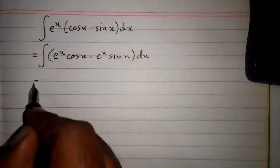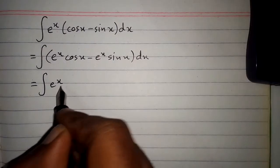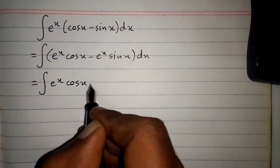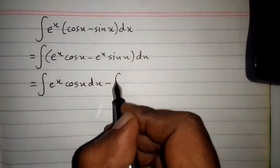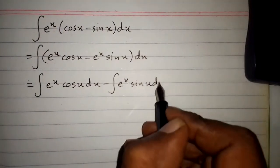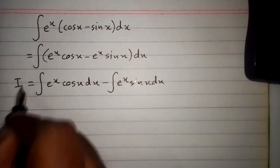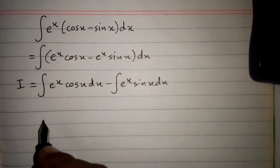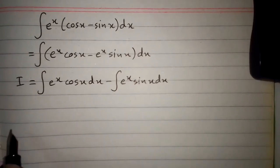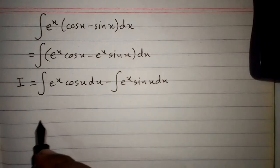Now we will apply the integral on both terms, so we have the integral of e to the power x cos x dx minus the integral of e to the power x sin x dx. We will suppose this whole expression is i.